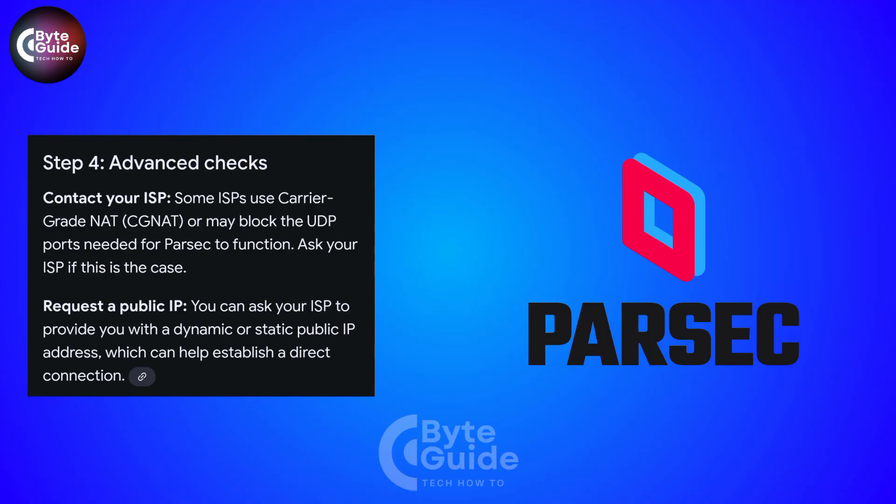So that's it. That's how you can fix Parsec error 6023 easily — by restarting, adjusting firewall settings, or checking your network setup. Thanks for watching.